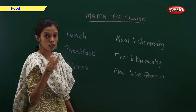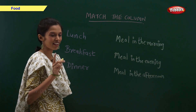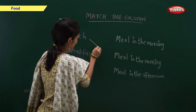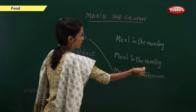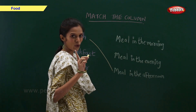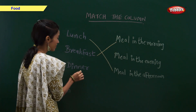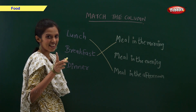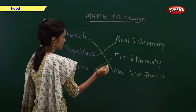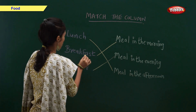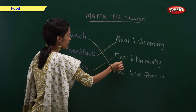Lunch — when do we take lunch? In the afternoon we take lunch. Breakfast — when do we take breakfast? We take breakfast in the morning. And dinner — when do we take dinner? Yes, in the evening. So, lunch is the meal in the afternoon, breakfast is the meal in the morning, and dinner is the meal in the evening.